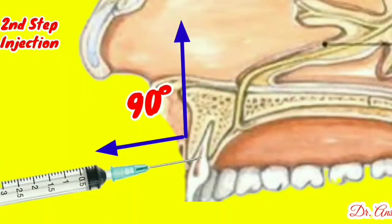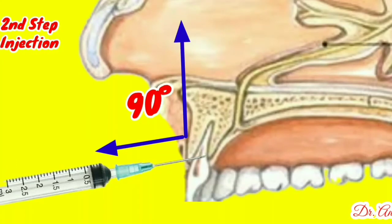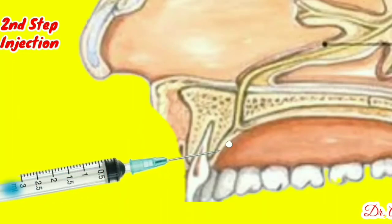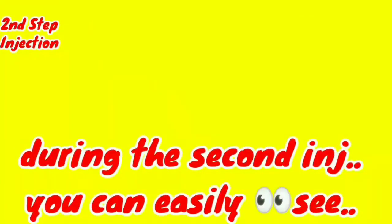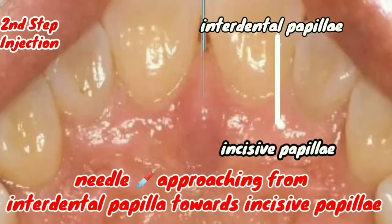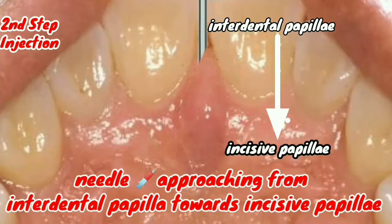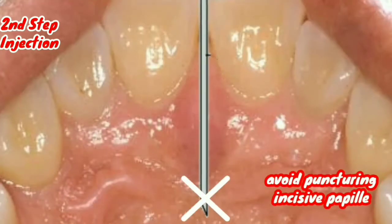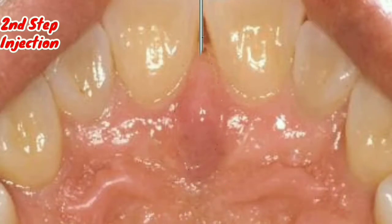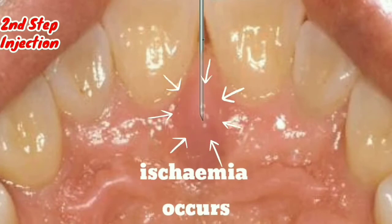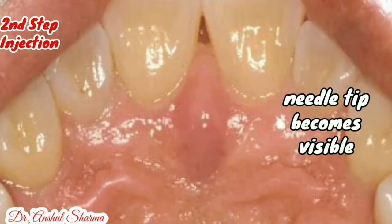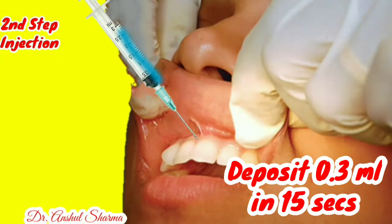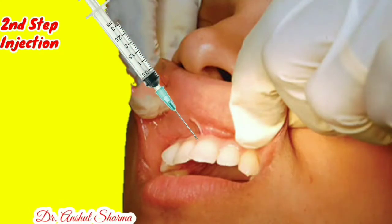However, as the needle penetrates towards the un-anesthetized palatal side, it will be necessary to administer minute volumes of solution to prevent discomfort. You can see the needle approaching from the interdental papilla towards and beneath the incisive papilla. Care must be taken to avoid puncture through the papilla into the oral cavity. When the needle has sufficiently reached below the incisive papilla, ischemia occurs and the needle tip becomes visible beneath the tissue surface. Perform negative aspiration, then deposit approximately 0.3 ml in approximately 15 seconds.